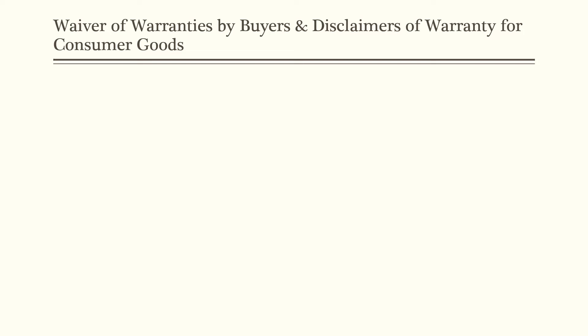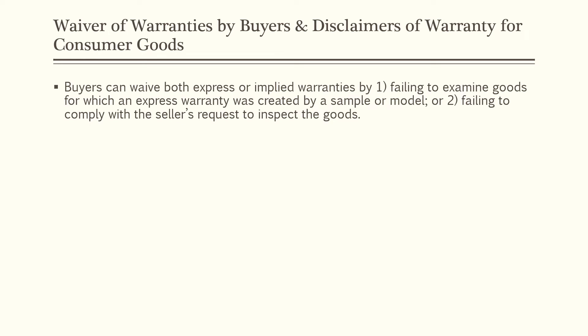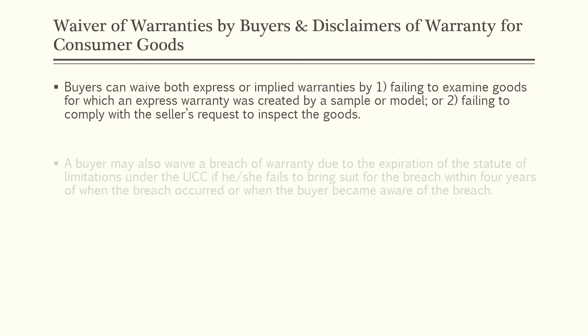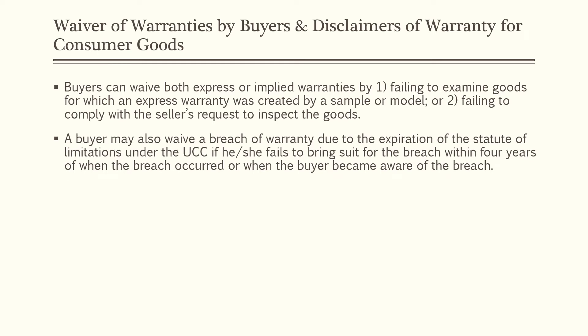Next we'll discuss waiver of warranties by buyers. Buyers can waive both express or implied warranties by failing to examine goods for which an express warranty was created by a sample or model, or by failing to comply with the seller's request to inspect the goods. If you have a model or sample and don't bother to inspect the goods delivered, you can waive your express or implied warranties. A buyer may also waive a breach of warranty due to the expiration of the statute of limitations — failing to bring suit for breach within four years of when the breach occurred or when the buyer became aware of it. The parties can shorten this time to as little as one year in their contract, but cannot extend it beyond the UCC's four-year statute of limitations.